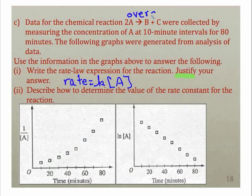This is an overall. This is not an elementary. We cannot get the order from that coefficient. We have to get that from experimental data. So we have one graph here. And this graph, I hope pretty clearly to you, is a curve. It is not a straight line. And so 1 over A is not a straight line.